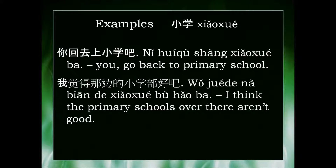It's a suggestion or kind of an instruction for someone. And the second one is 我觉得那边的小学不好吧. 我觉得 means I think, or it's my opinion. 那边 means that side, or over there. 那边的小学 means the primary schools over there. 不好吧 — they're not good.